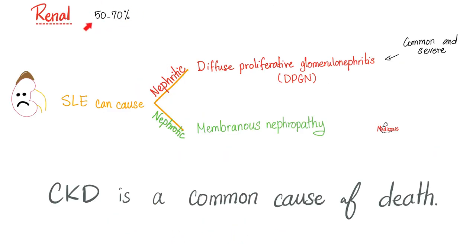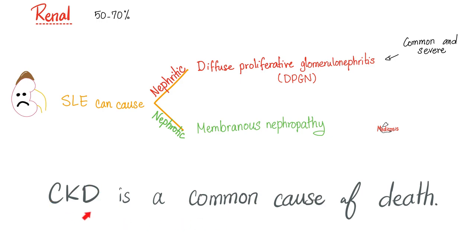50 to 70 percent of lupus patients have kidney disease. It could be nephritic, it could be nephrotic, or it could be both. For example, diffuse proliferative glomerulonephritis is nephritic; membranous nephropathy is mostly nephrotic. A common cause of death is chronic kidney disease which ends up in end-stage renal disease when your GFR is very low.